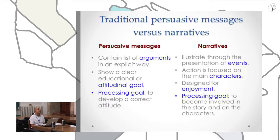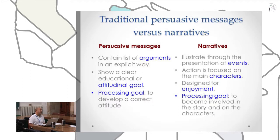Also, there are clear differences in the processing goal in each case. With respect to traditional persuasion, the processing goal is to develop a correct attitude from the audience's point of view. On the other hand, the processing goal for narratives involves involvement with the story and with the characters.